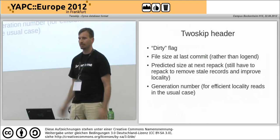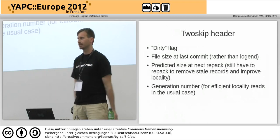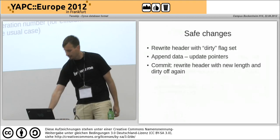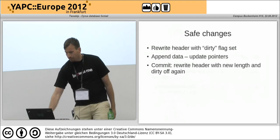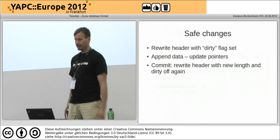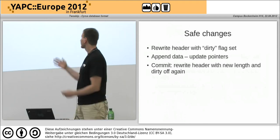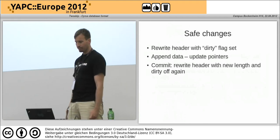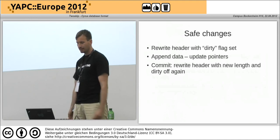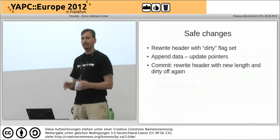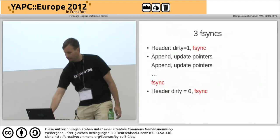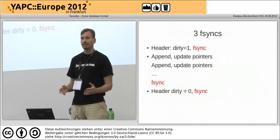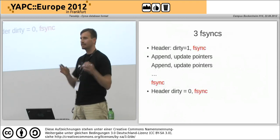There's also a generation number so that you can tell if locations in your file have changed — when it does a rewrite, it increments that. I thought: great, we can now get a safe change just by rewriting the header saying that it's dirty, appending the data, and committing again. You need to fsync three times to guarantee this.